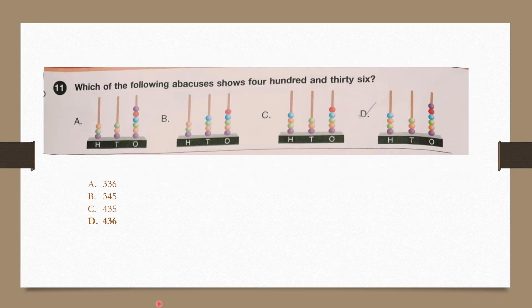Question number 11: Which of the following abacuses shows 436? In option A it shows 336, option B shows 345, option C shows 435, and option D shows 436. This is the same as 436. So our answer is option D.